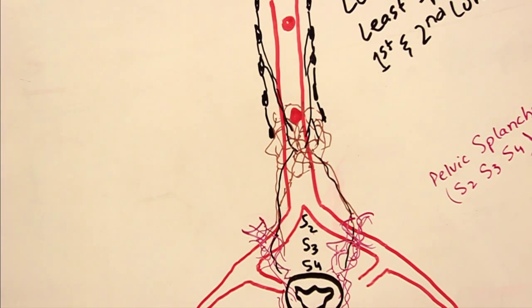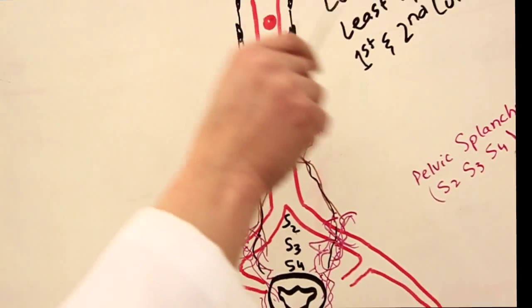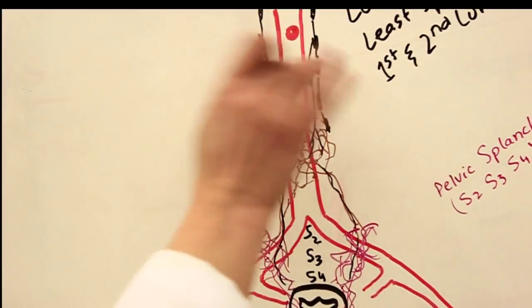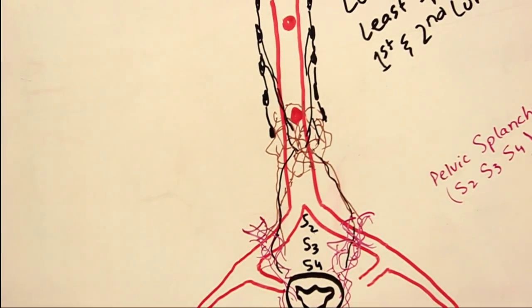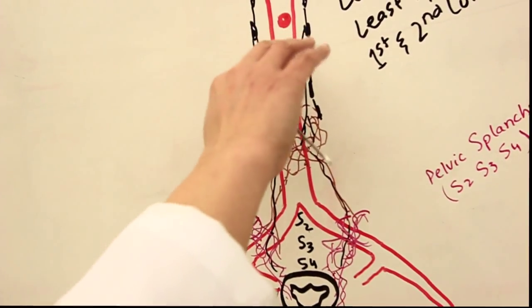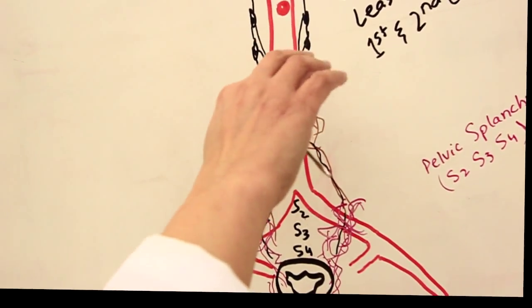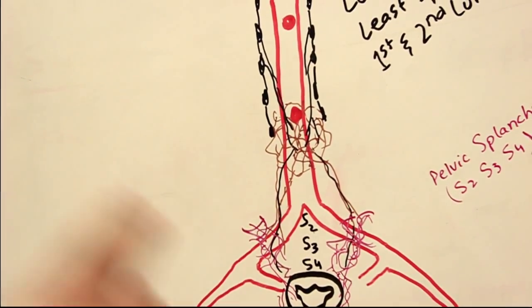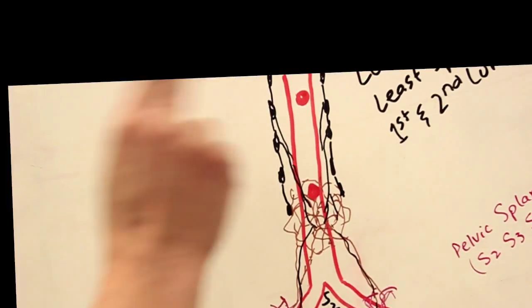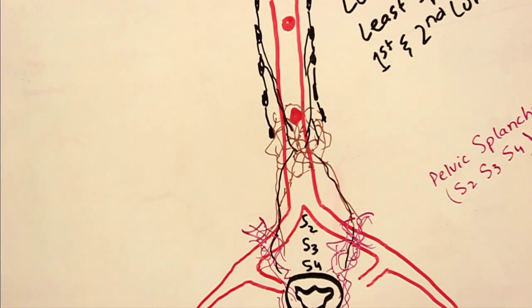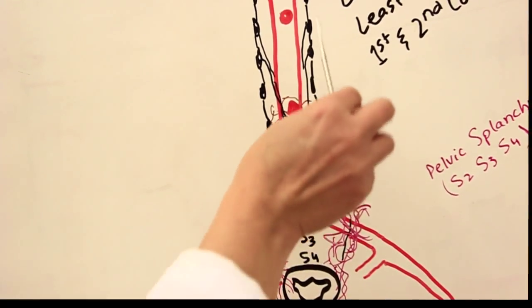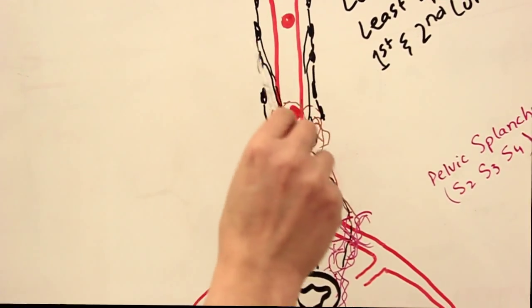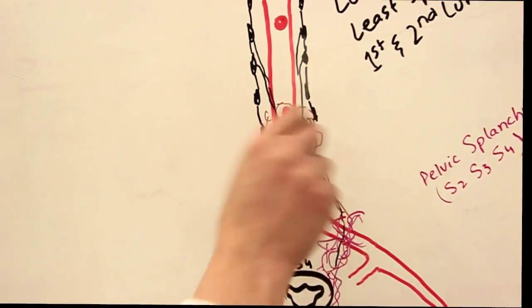In the thoracic region, near the domes of the diaphragm, we have three nerves descending on either side of the rib cage, contributing to the formation of plexuses — the celiac plexus, the superior mesenteric plexus, and the renal plexus. All these plexuses are made up of autonomic fibers. These three nerves are the greater splanchnic nerve, the lesser splanchnic nerve, and the least splanchnic nerve.